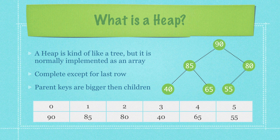So what exactly is a heap? Well a heap is kind of like a tree but it is normally implemented as an array. As you can see over here this would be an example of a heap, but this also would be an example of a heap which is what we have down here with the array structure. You can see exactly how the indexes match up with the trees. Now one of the rules whenever you're creating a heap is that every row needs to be complete, meaning there's an item in each one of the nodes except for in the last row. And another rule is that parent keys are always bigger than their children.